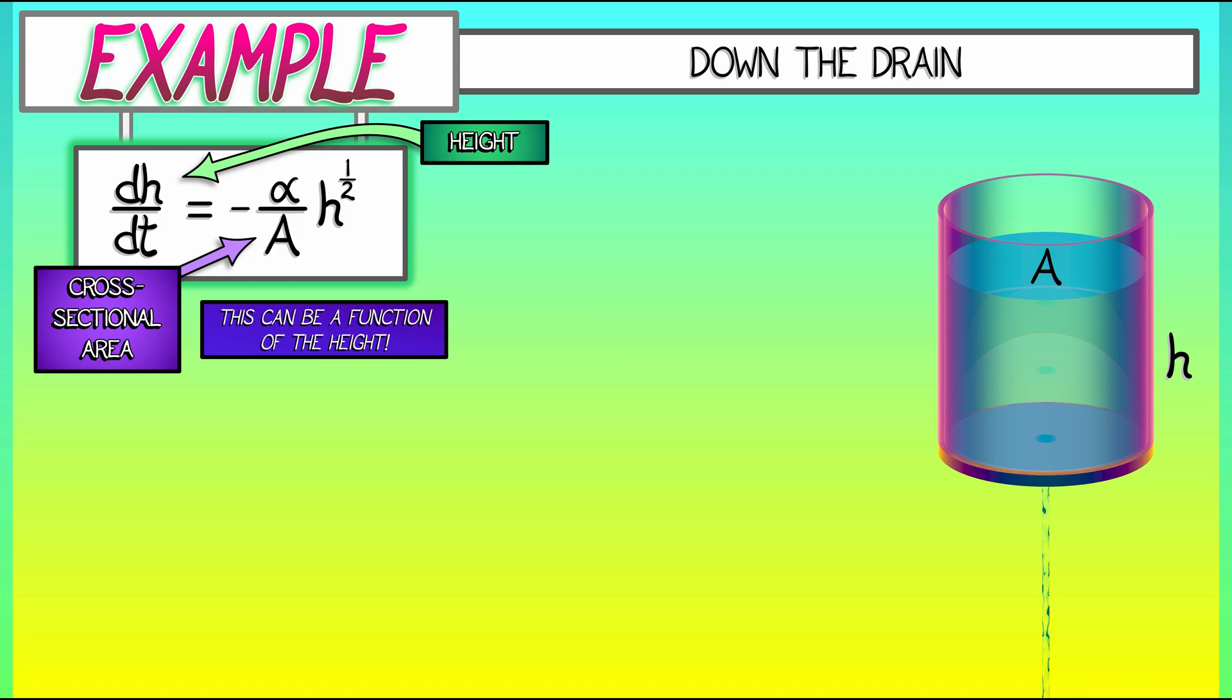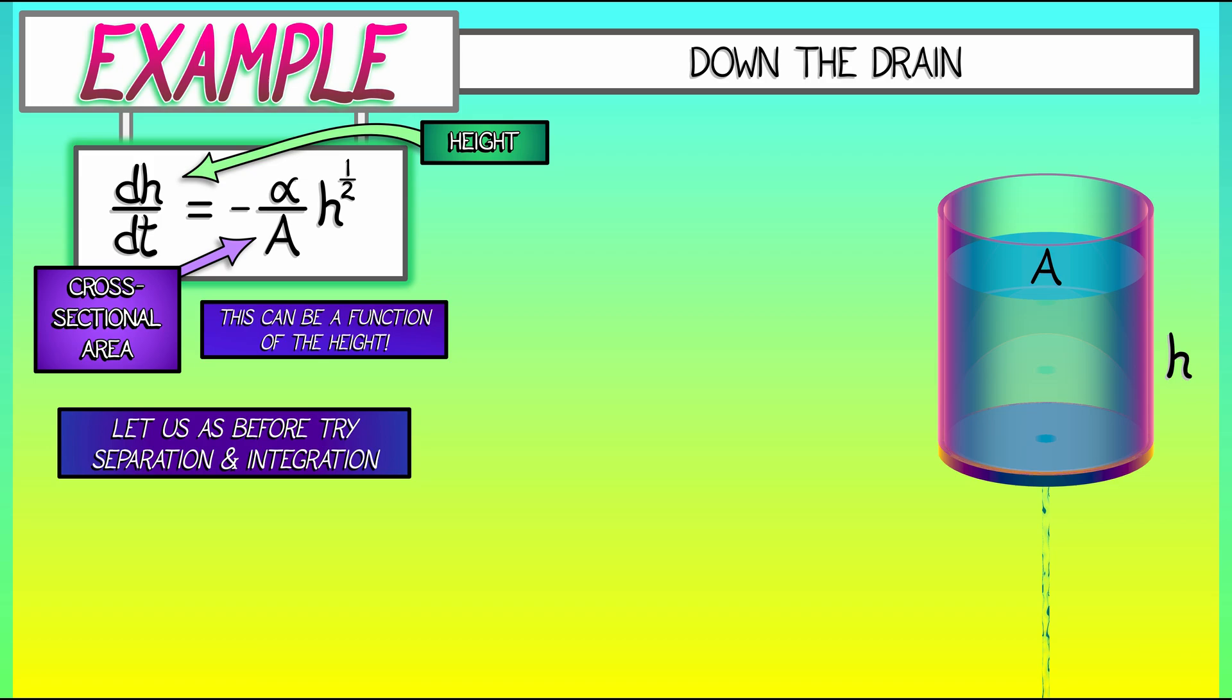Well, just like before, we're going to separate out both sides and then integrate. Let's get all the t terms on one side, so multiplying through by dt. On the right, we have dt times minus alpha. On the left, we have the h terms, including the dh. Multiplying both sides through by A, we have capital A as a function of h. And then dividing both sides by h to the one-half, we multiply the left-hand side by h to the negative one-half. Now we've got all the h terms on the left, all the t terms on the right. We integrate both sides.